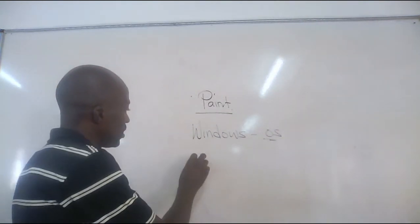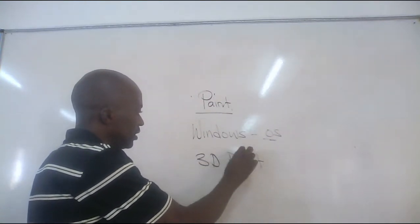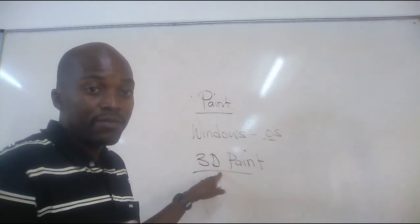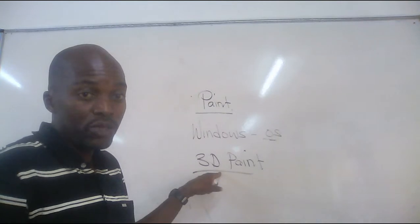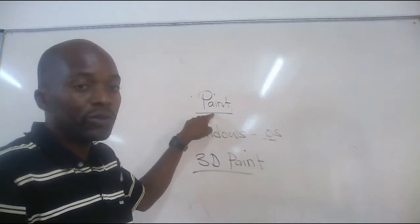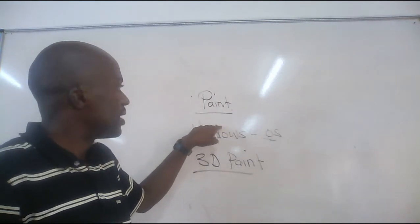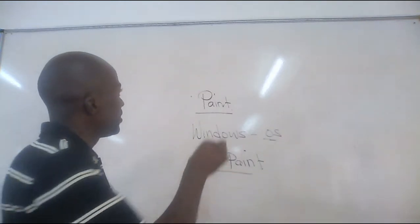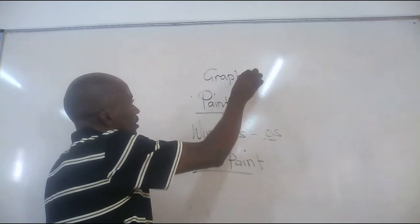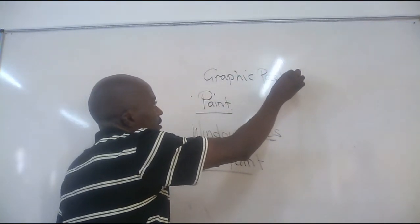Windows 10 has come with 3D Paint. This Paint is a program — if you remember, we used it a lot in Grade 4. In Grade 4 we learned about Paint, we looked at the tools that are found in Paint, and this Paint qualifies to be called a graphic package.